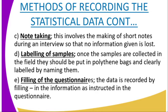Number four is the labeling of samples. Once the samples are collected in the field, they should be put in a polythene bag and clearly labeled by naming them. For example, when you are going to the field and collecting different types of rocks, you collect those rocks, put them in a polythene bag, and label them. Similarly, for different types of soils, you collect them, bring them, put them in a polythene bag, and then label them.